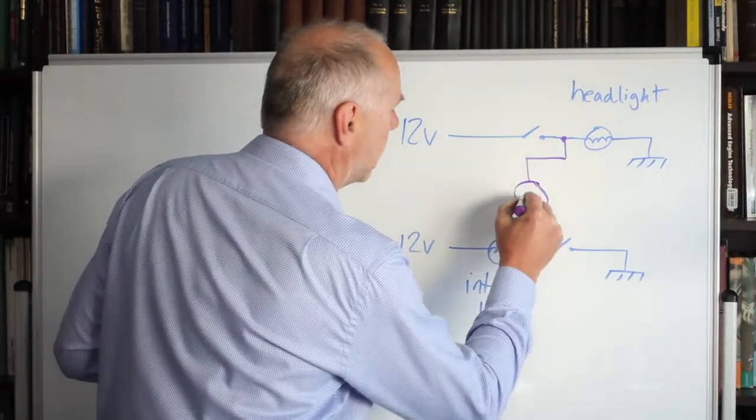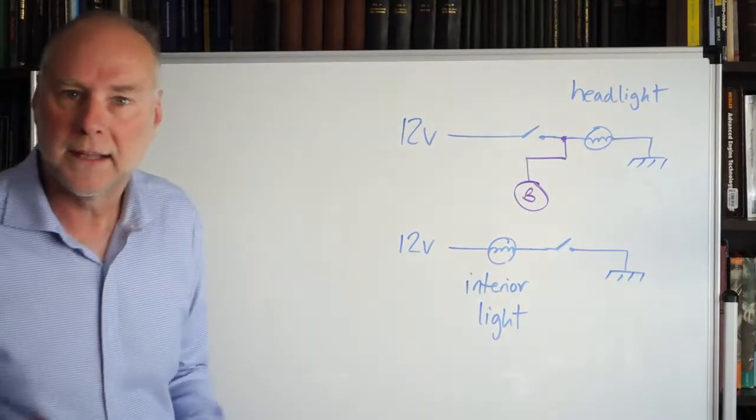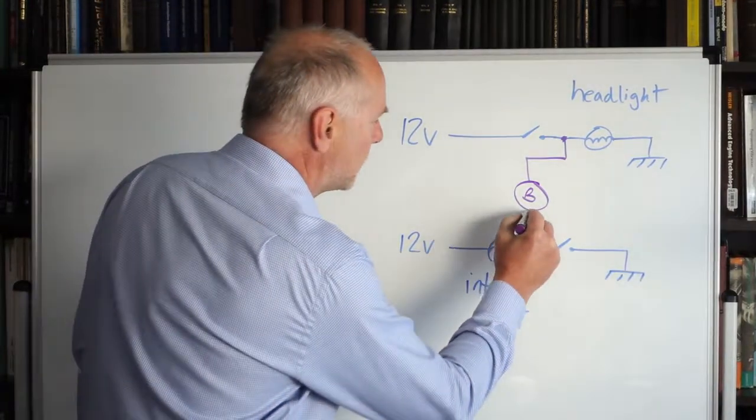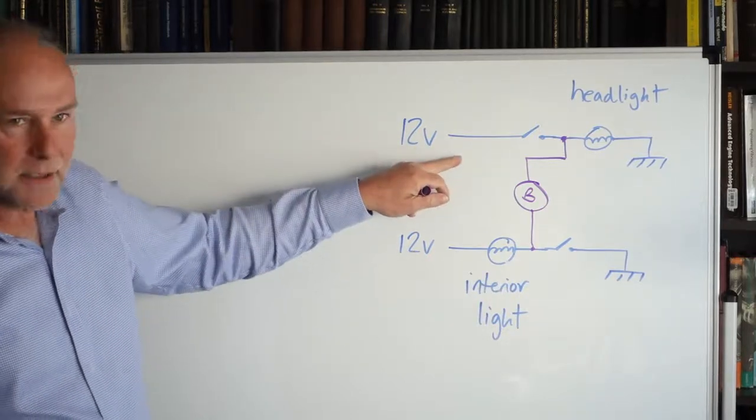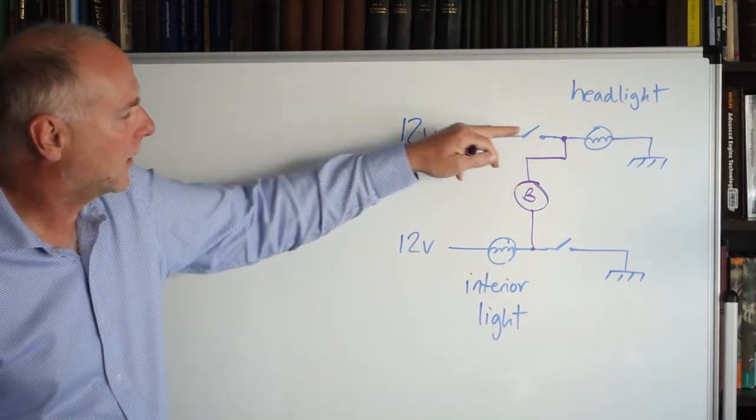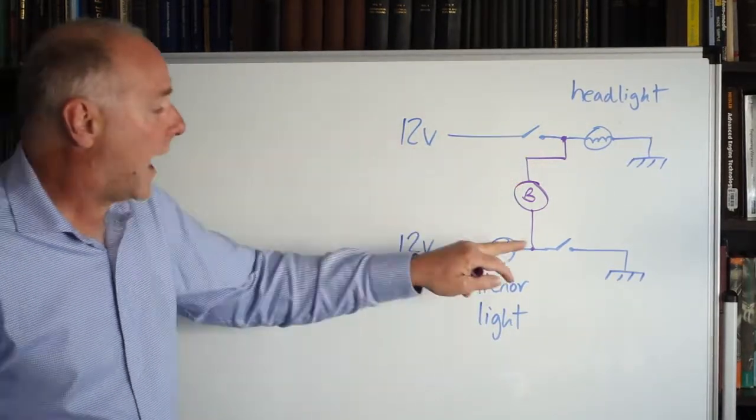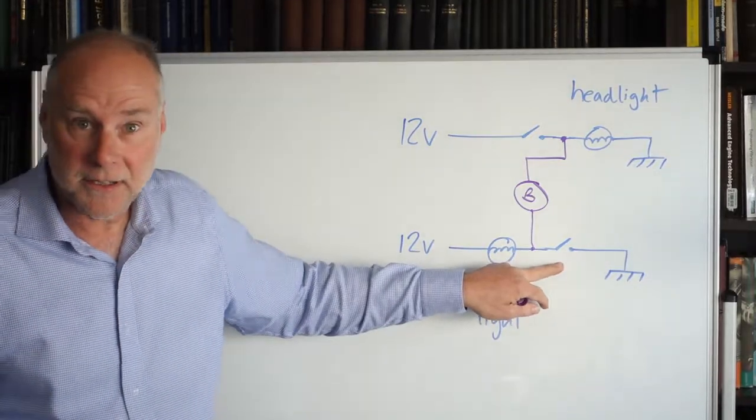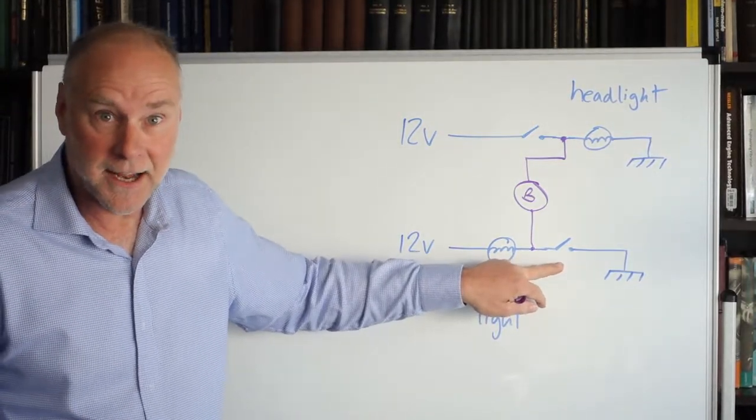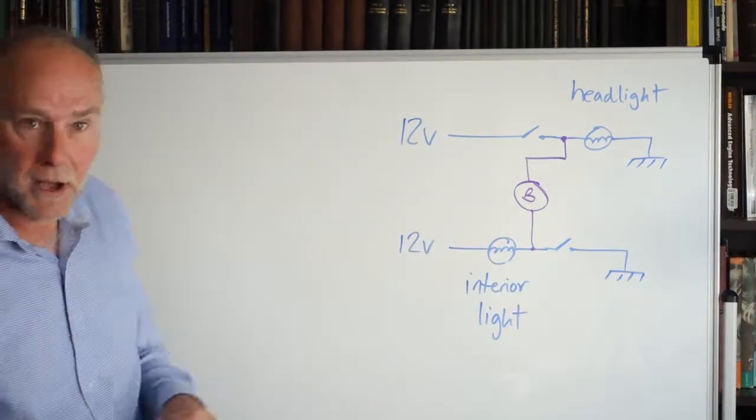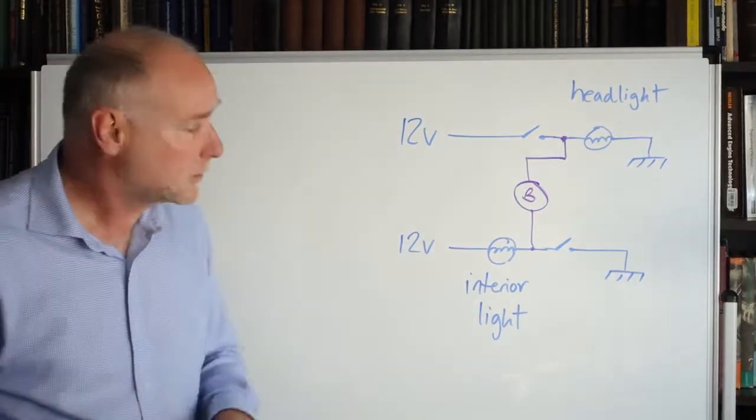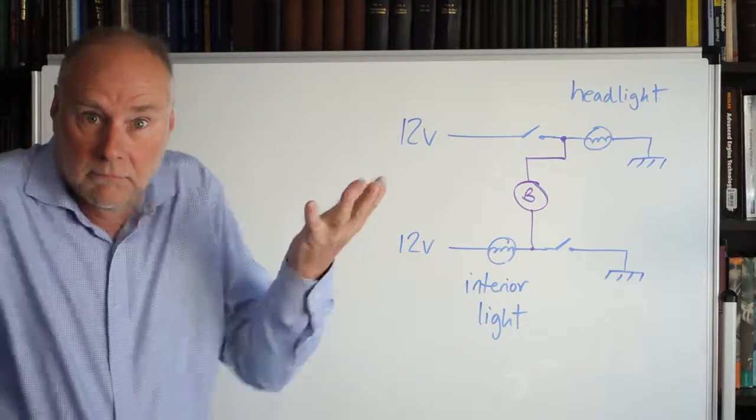We put the buzzer in here and then we connect the other side of the buzzer to there. Now, look what happens, if the headlights are on, there's 12 volts available there, if the headlights are on and the door switch is closed because the interior light has come on when you've opened the door, then power can flow through like that. So if you open a door and you've got your headlights on, the buzzer sounds. Easy.